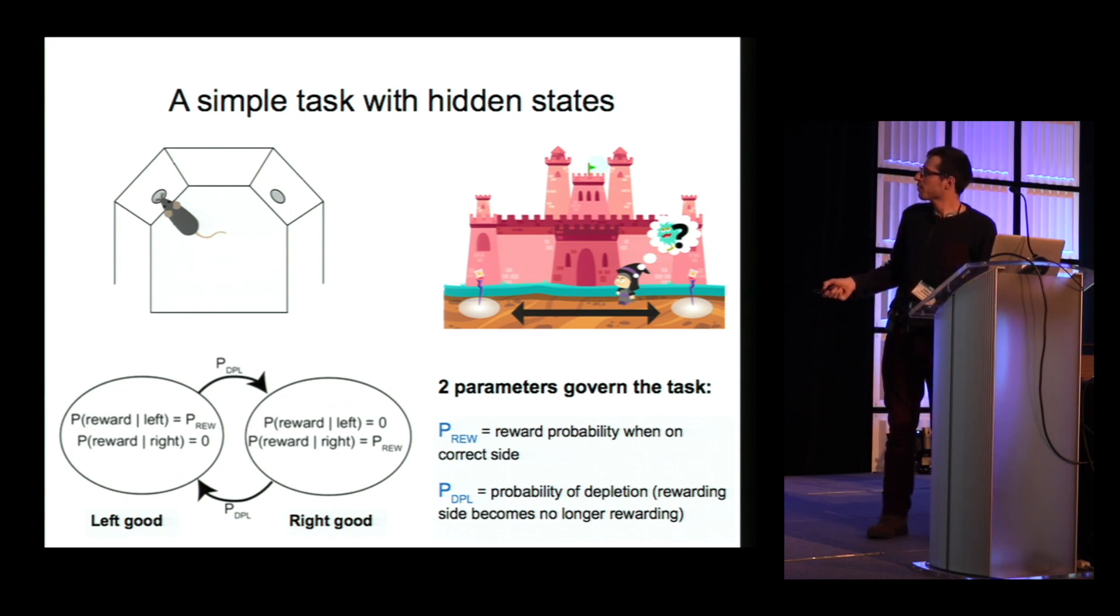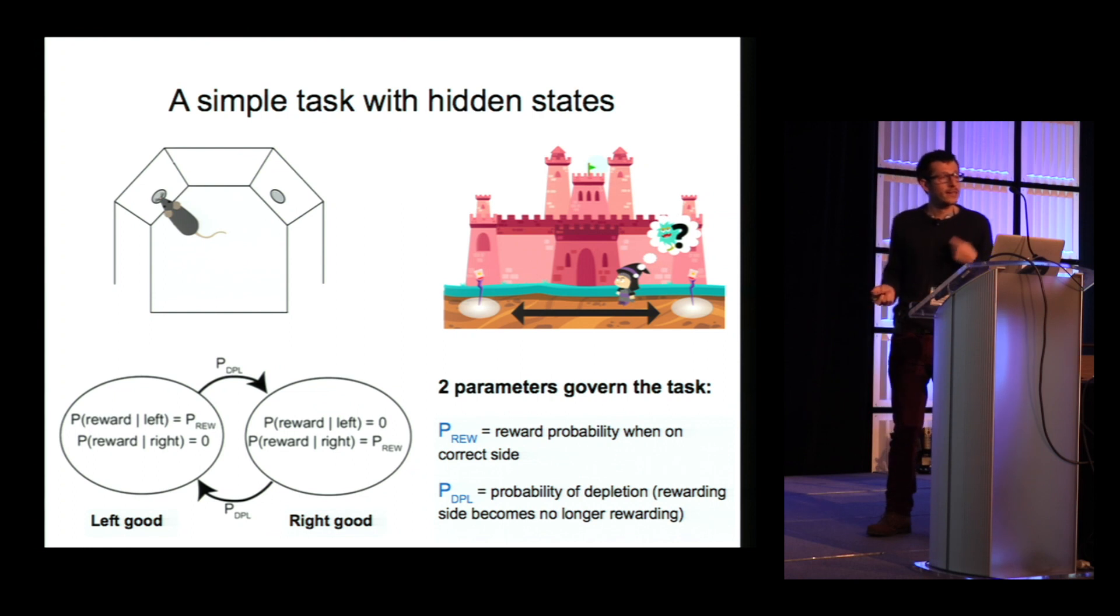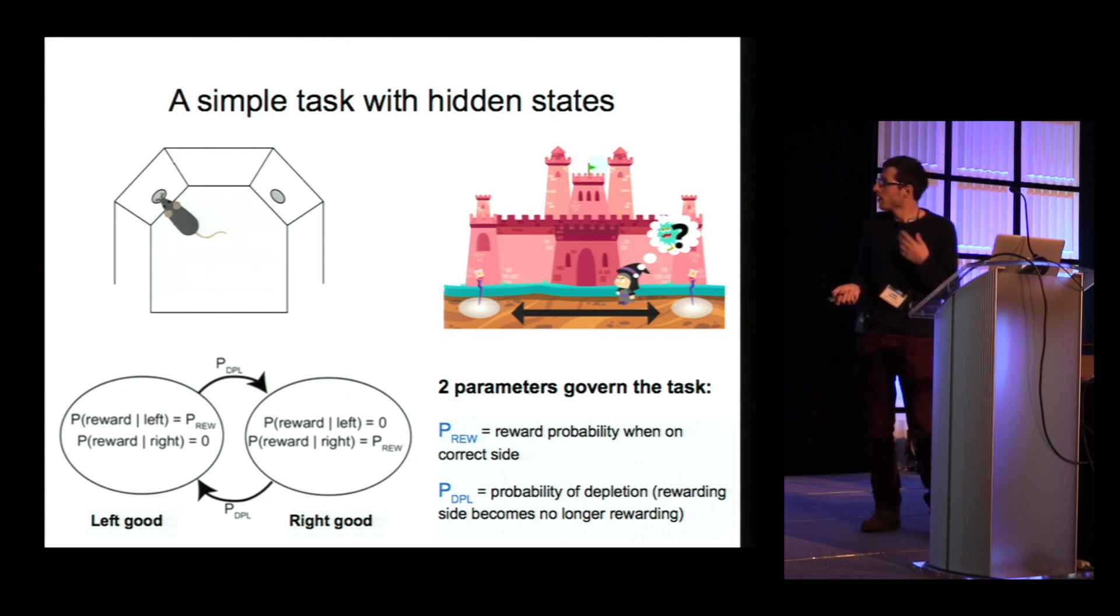which has two states, and alternates between them. So, we have the left good state, where attempts on the left are rewarded with some fixed probability p of reward, and attempts on the right are never rewarded. And then, with some probability p of depletion, the left side could deplete, and we would transition to the right good state, where instead attempts on the right are rewarded with some probability. And so, we can see that there are two parameters governing the task, probability of reward and probability of depletion.